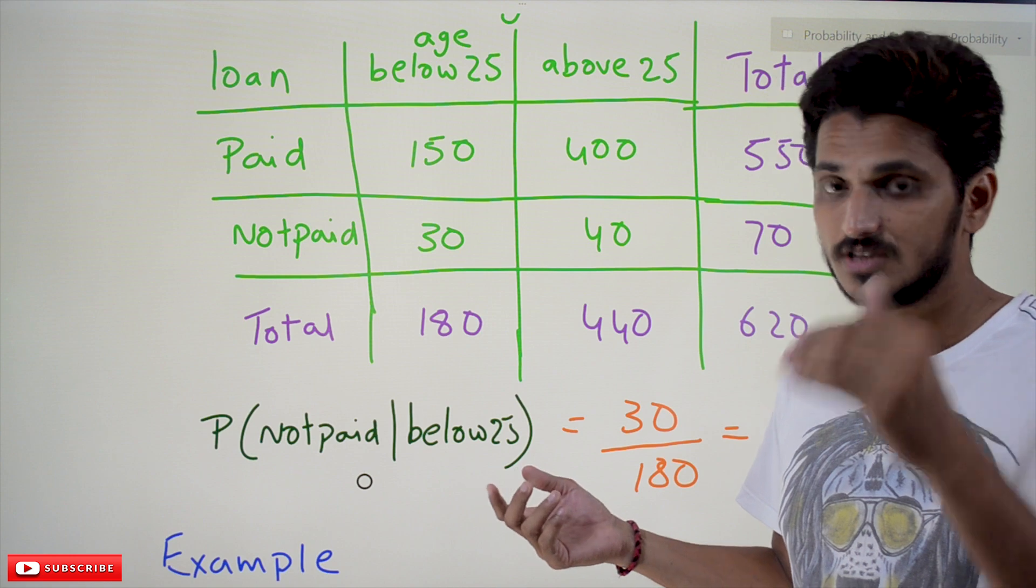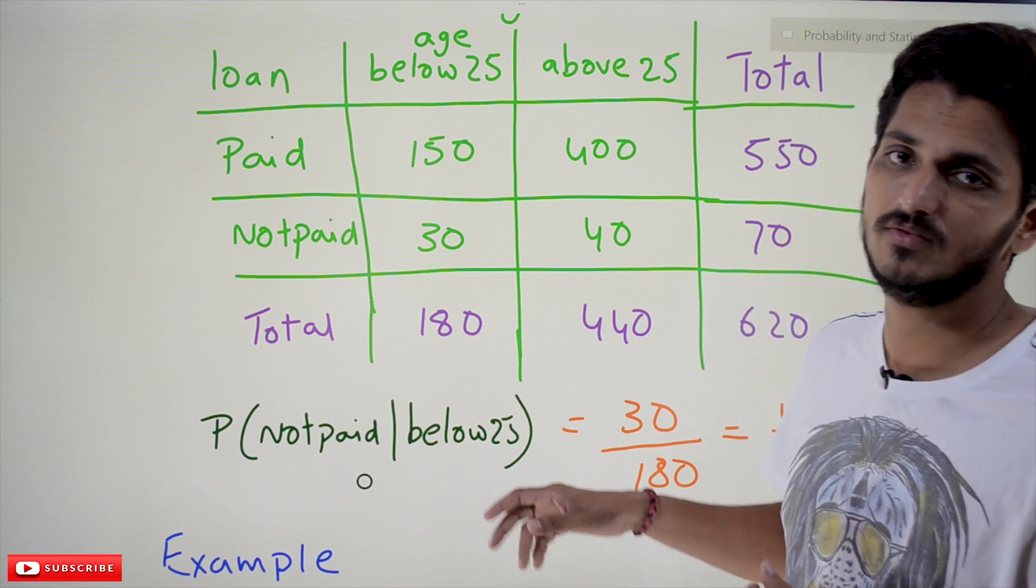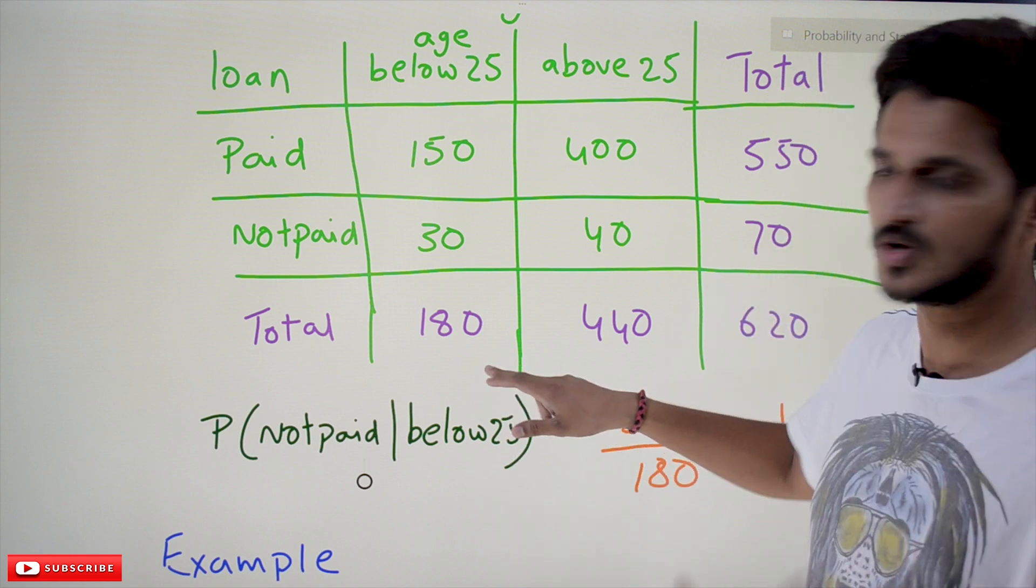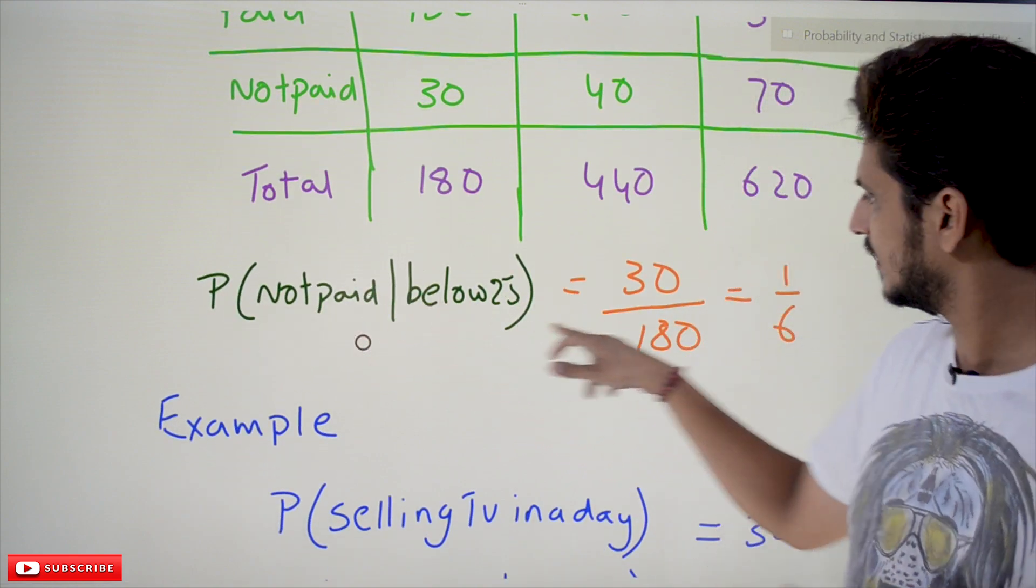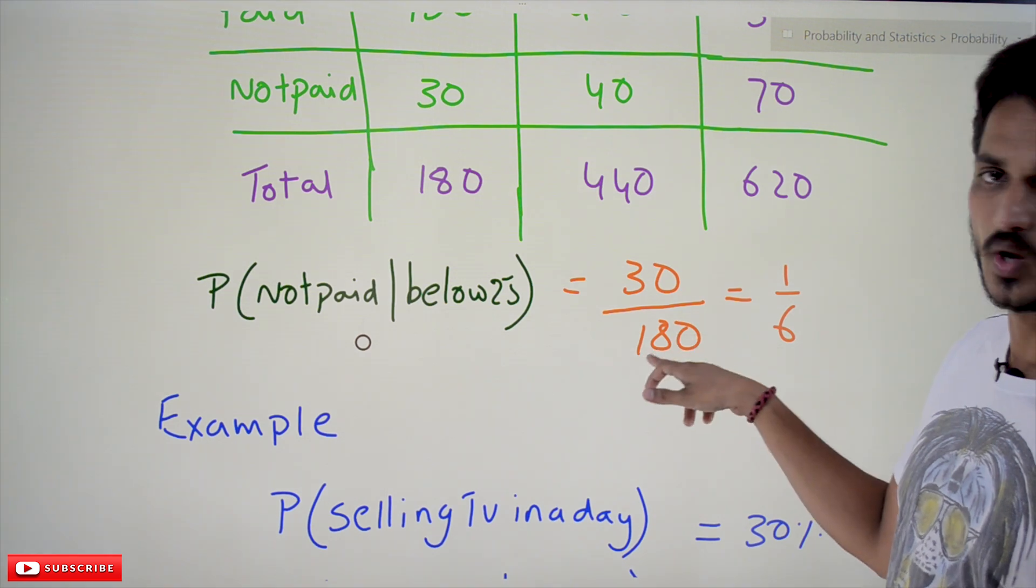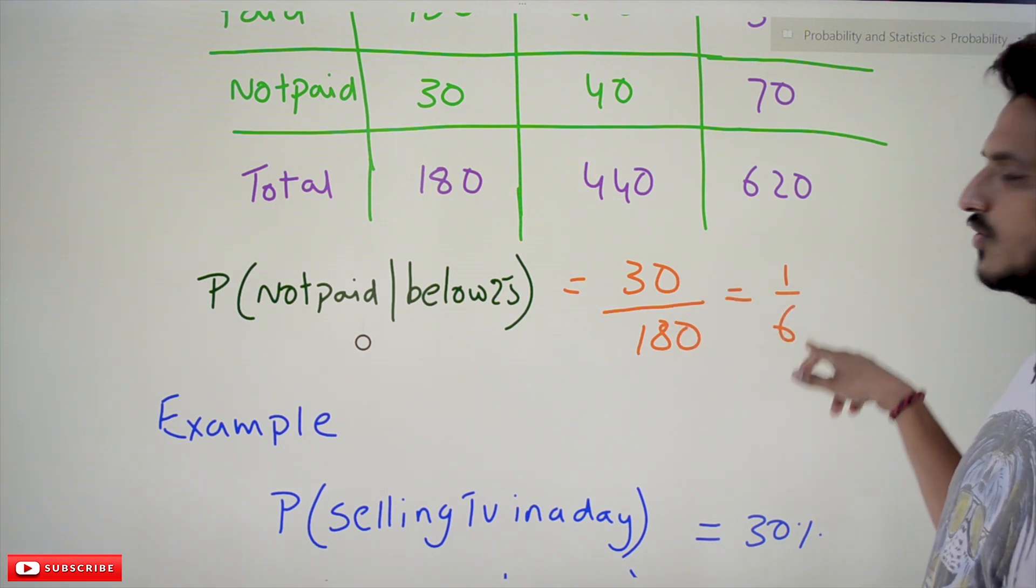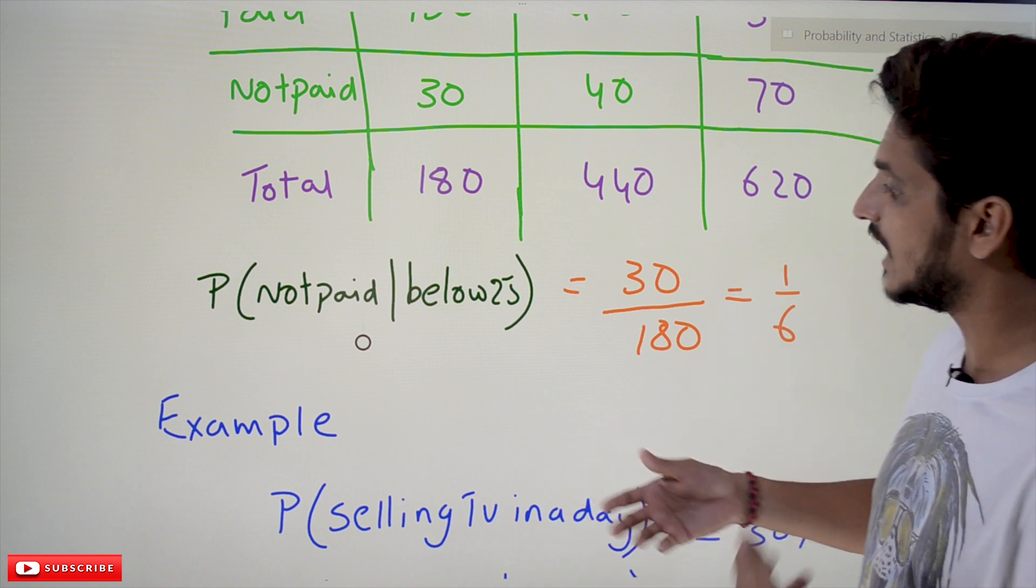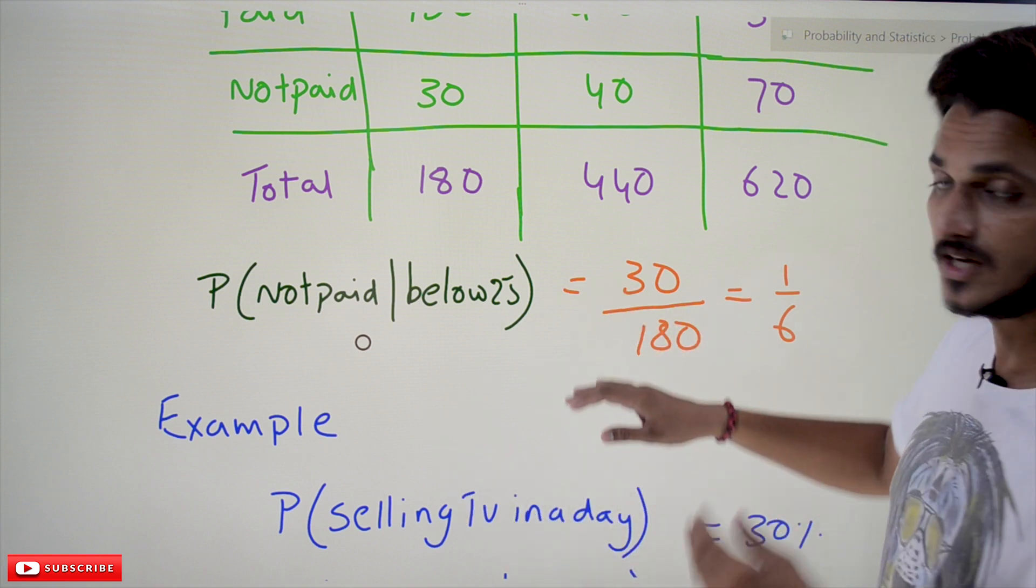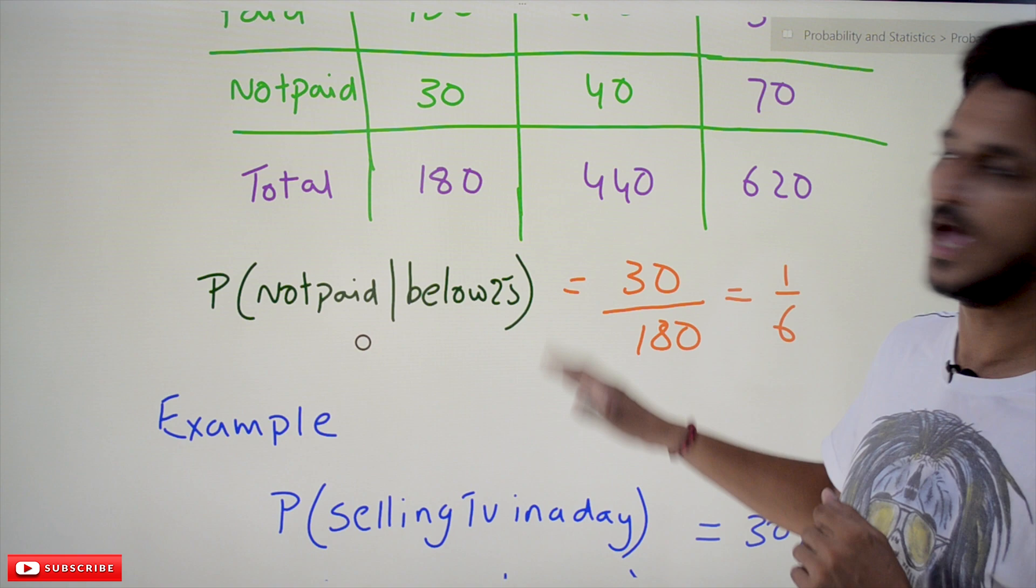So probability of not paid, if he is below 25, then our sample space is 180. 30 by 180, that is equal to 1 by 6. This is how conditional probability is helpful in analyzing, in giving the good prediction about our data.